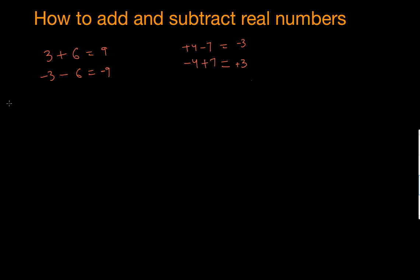Now let's do another example: 3 plus negative 5. The trick here is when positive multiplies by negative it always gives negative. Both signs are opposite, so we subtract: 5 minus 3 is 2. The bigger number is 5, and the sign in front of 5 is negative, so the answer is negative 2.